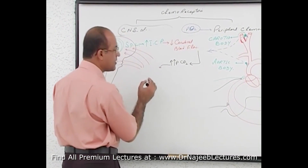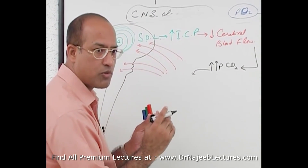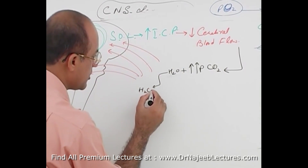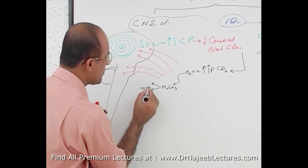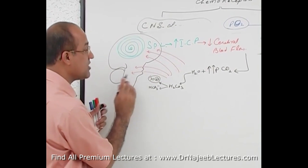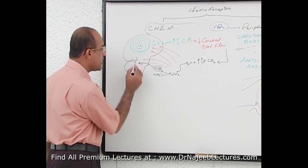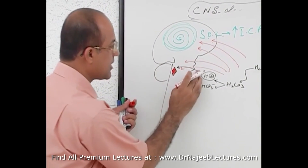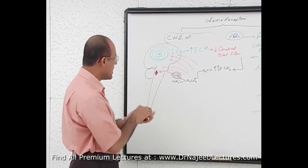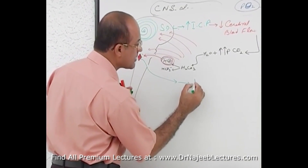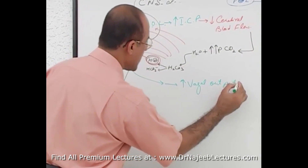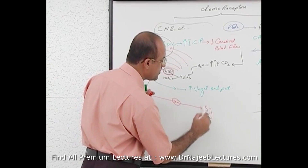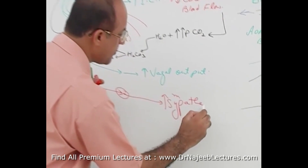The partial pressure of carbon dioxide increases in the central nervous system. This carbon dioxide fuses with water in the central nervous system — carbon dioxide plus water makes H2CO3, which releases protons. These protons generated within the central nervous system through high levels of partial pressure of carbon dioxide stimulate the central chemoreceptors. These central chemoreceptors, stimulated by rising carbon dioxide and proton concentration, will lead to a powerful increase in vagal output, and at the same time there will be an intense increase in sympathetic output.